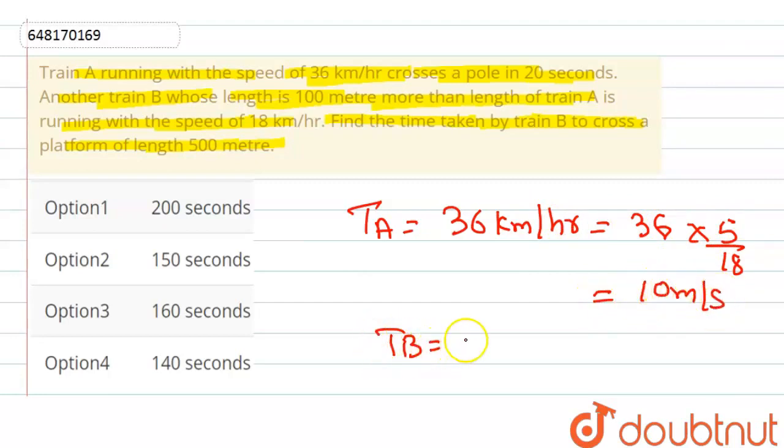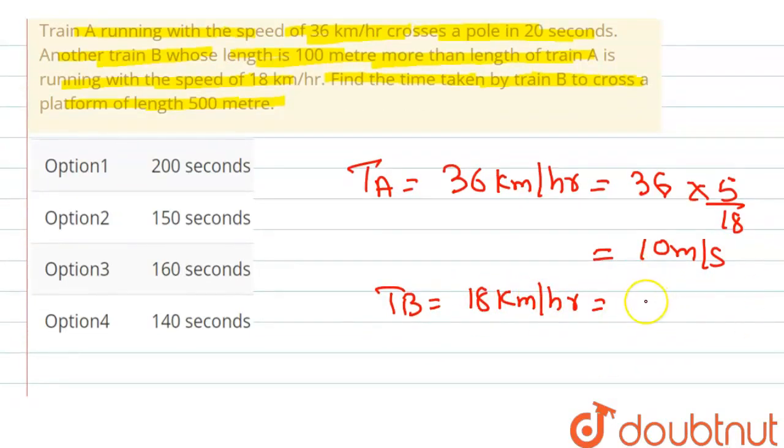Train B length 18 km per hour. So, it's a value of 18 into 5 by 18. That is 5 meter per second.